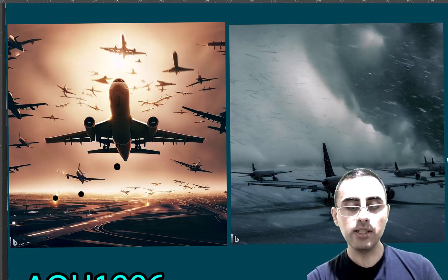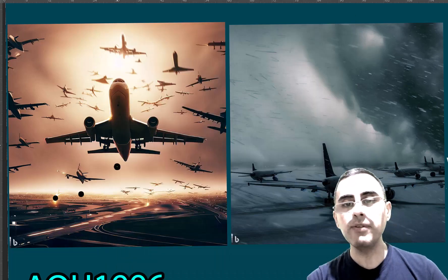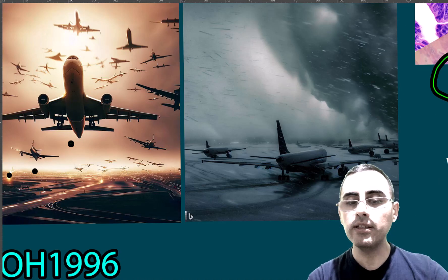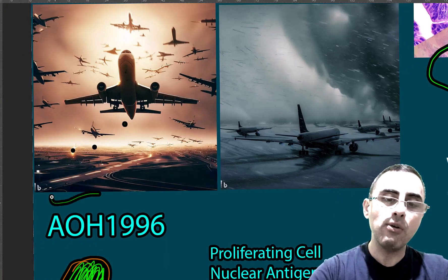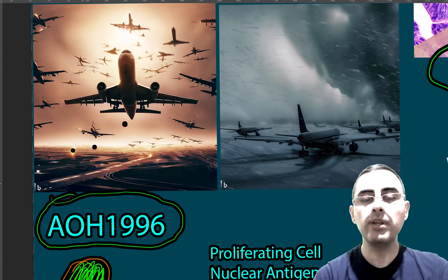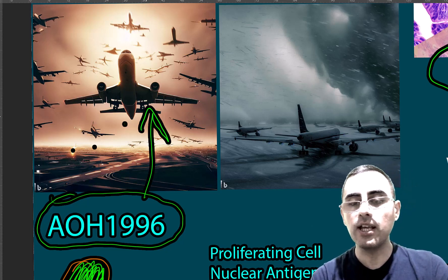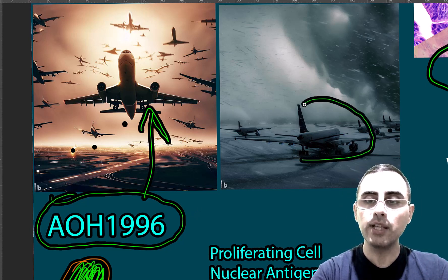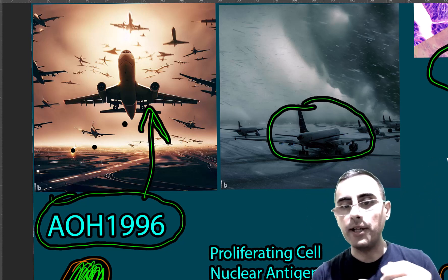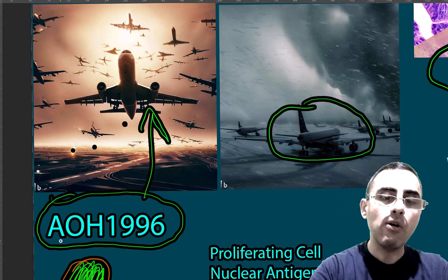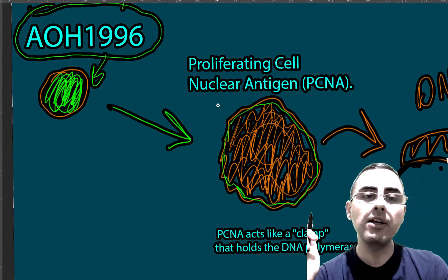Now imagine a huge storm which prevents those planes — those cancer cells — from taking off. That storm is AOH-1996. So if the airplanes are cancer cells, this storm prevents them from taking off, from flying, from releasing into our body. That is what AOH-1996 is doing.